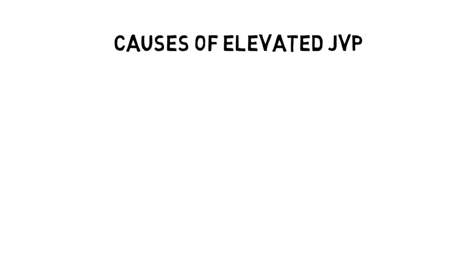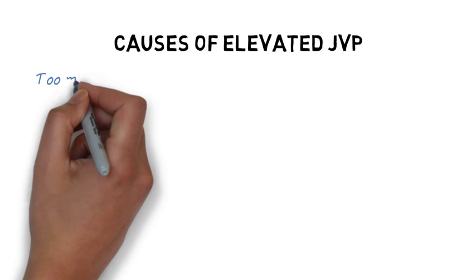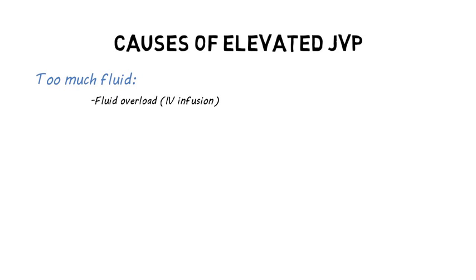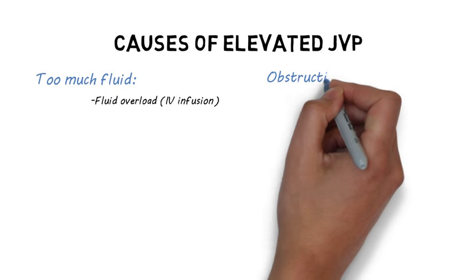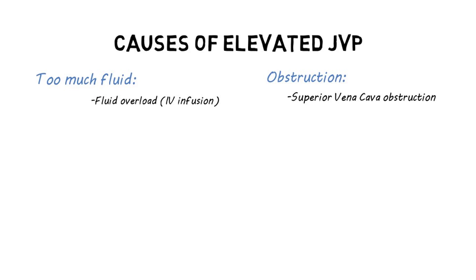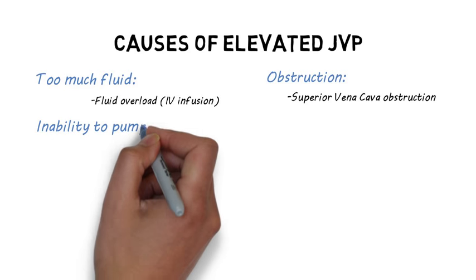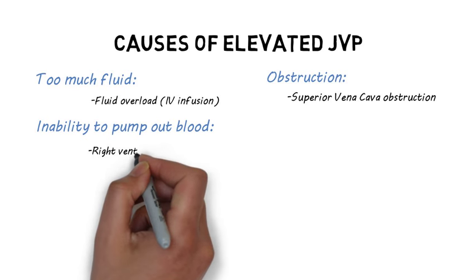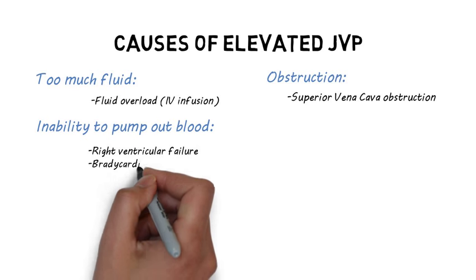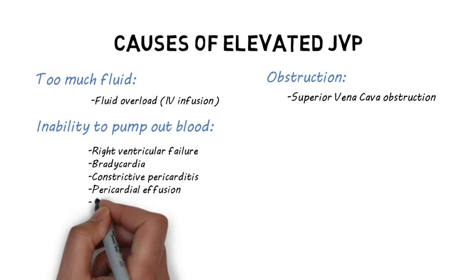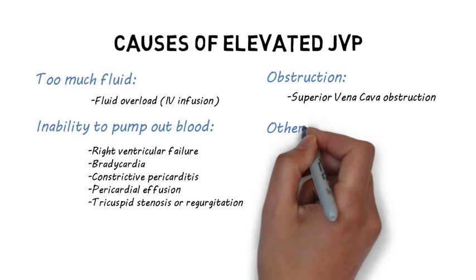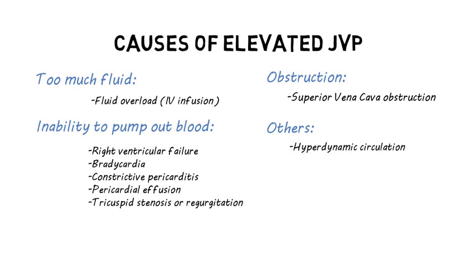Causes of elevated JVP include conditions that cause too much fluid, such as fluid overload from IV infusion, obstruction of blood before reaching the heart, such as SVC obstruction, conditions in which the heart is unable to push the blood out effectively, such as right ventricular failure, bradycardia, constrictive pericarditis, pericardial effusion, tricuspid stenosis or regurgitation, and other causes, including hyperdynamic circulation.